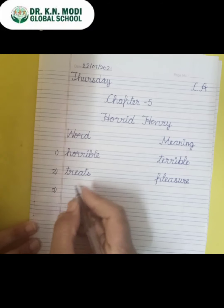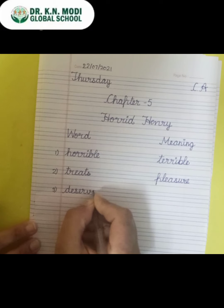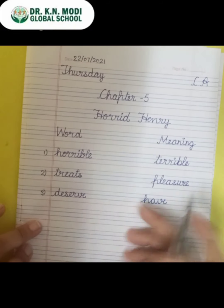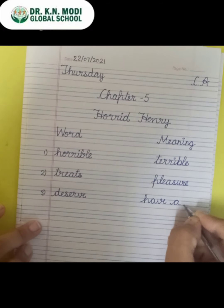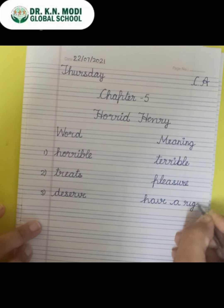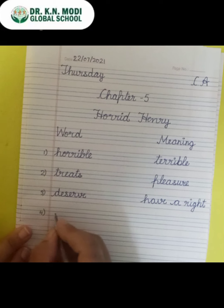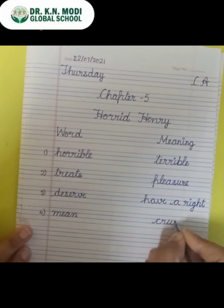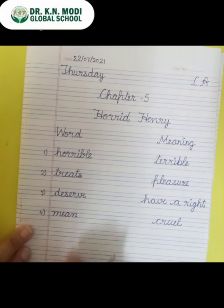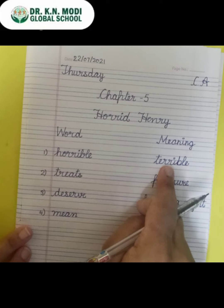Now come to the third word. The third word is D-E-S-E-R-V-E — deserve. What is the meaning of deserve? Have a right. Now the fourth word is M-E-A-N — mean. What is the meaning of mean? Cruel.